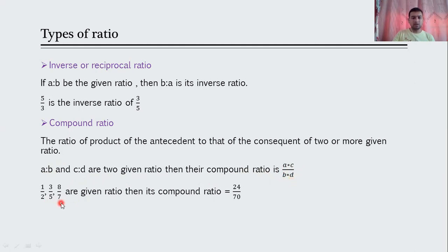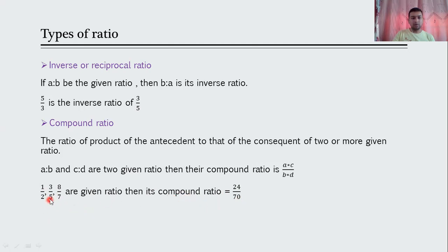For example, for the three ratios 1 upon 2, 3 upon 5, and 8 upon 7: the antecedents are 1, 3, 8 and the consequents are 2, 5, 7. Product of antecedents: 1×3×8 = 24; product of consequents: 2×5×7 = 70. So the compound ratio is 24 upon 70. In an exam, simply take the product of antecedents and the product of consequents.